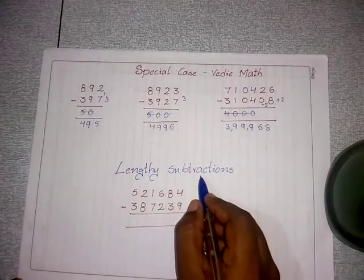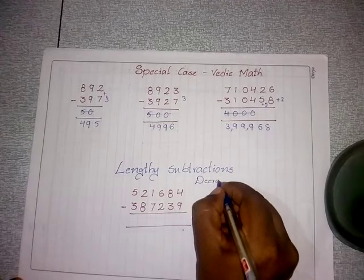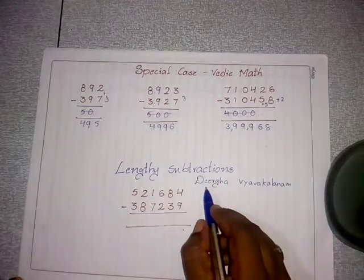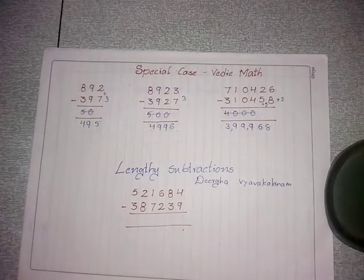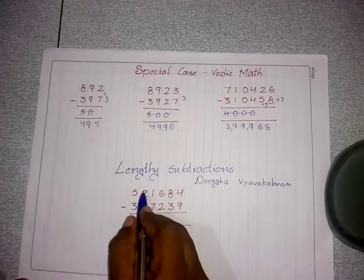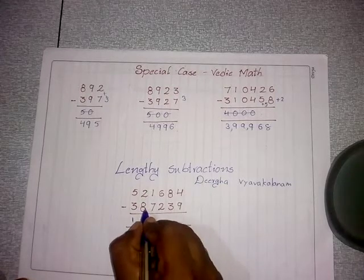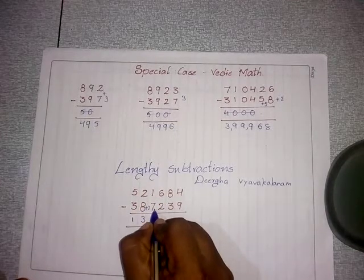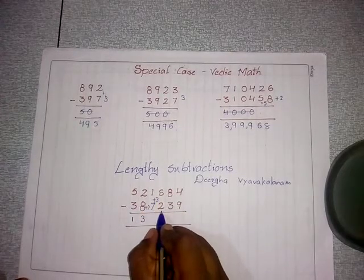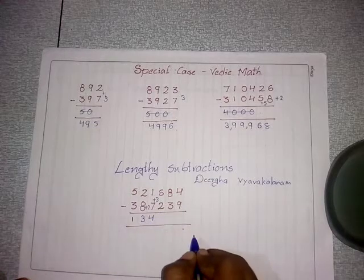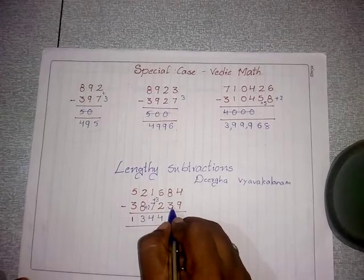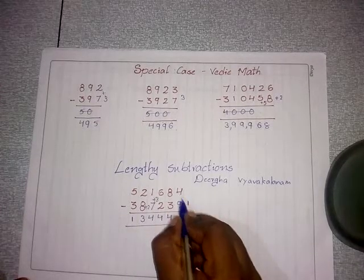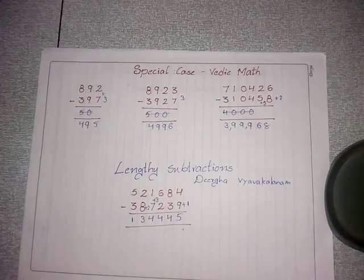Now let's go with lengthy subtraction — in Vedic maths this is called 'Dhirga.' We have a column method. Example: 5 minus 3 equals 2, next is mismatch so write 1. Complement of 8 is 2; 2 plus 2 equals 4, but next is mismatch so write 3. Complement of 7 is 3; 3 plus 1 equals 4. Next is match — no need to reduce, write exactly 4. Then 6 minus 2 equals 4, 8 minus 3 equals 5, but next is mismatch so reduce 4. Complement of 4 is 1; 4 plus 1 equals 5. This is the answer.